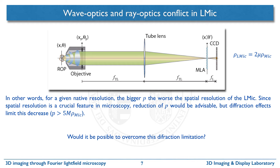Summarizing: for a given native microscope, the smaller the pitch of the microlenses, the better the resolution of the light field microscope. However, diffraction effects prevent the use of really small microlenses. Is it possible to achieve good resolutions without these undesirable diffraction effects in light field microscopy? The answer is yes, and we will share the solution in a while.